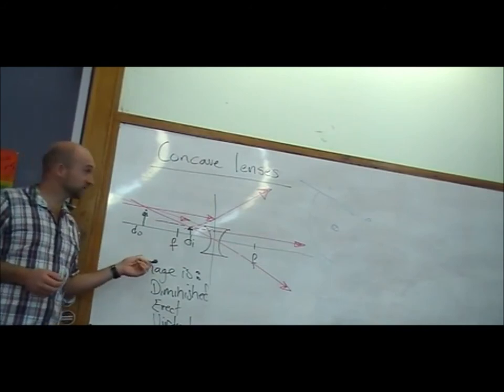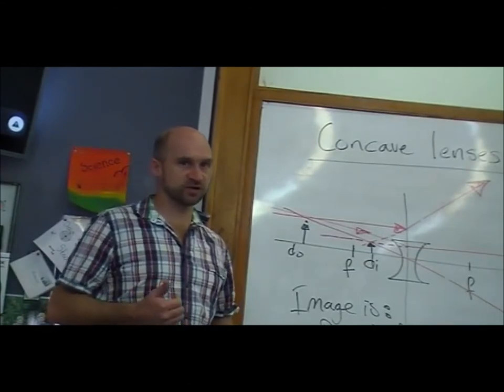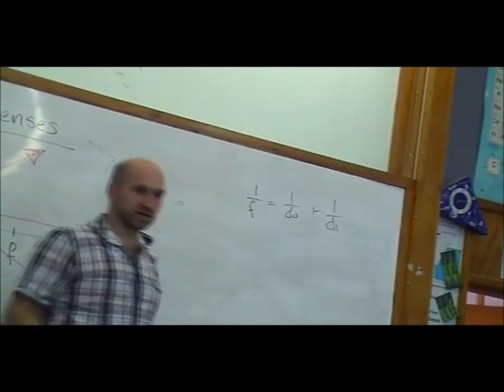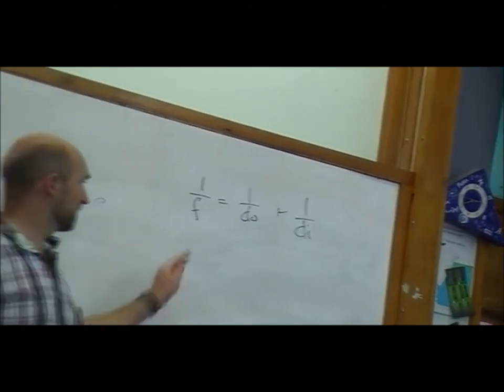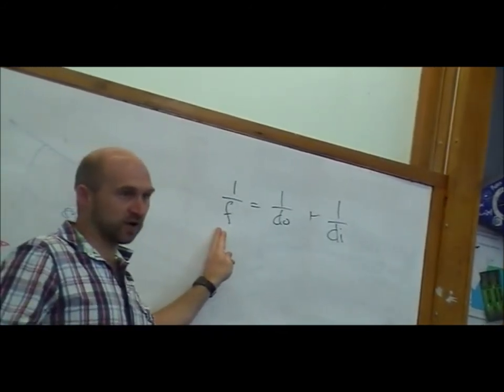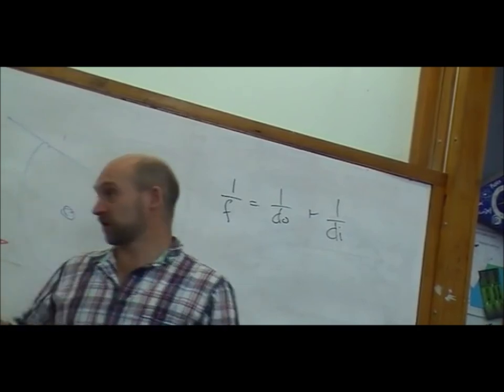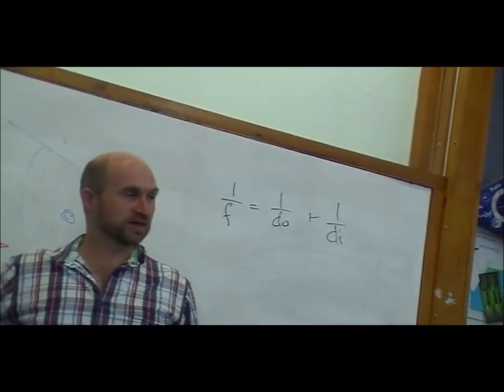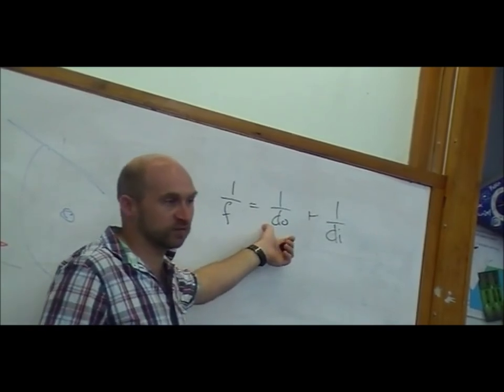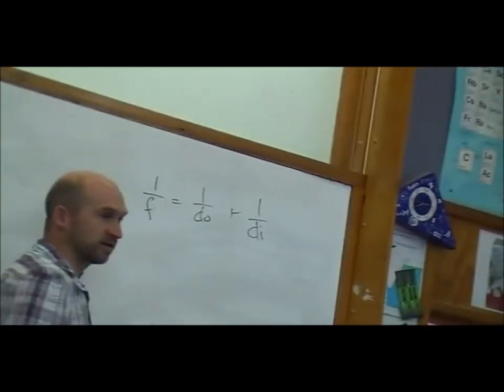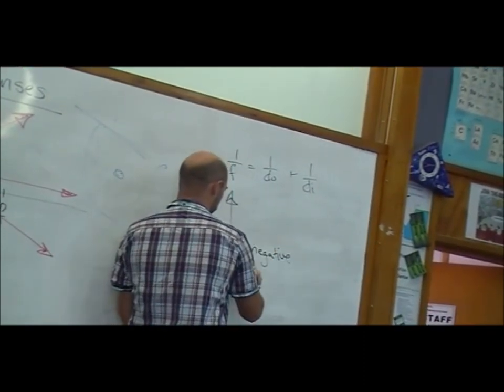When we're doing calculations for the concave lens, we're going to be able to use our same equation. Our 1 over F is 1 over DO plus 1 over DI. The thing we have to be aware of, and careful of, and the thing that will often trip us up when we're doing calculations, is that the focal length of a concave lens like this is always going to be negative. And, because the image we form is always going to be virtual, that DI is also always going to be negative. The DO has to be real, the object has to be a real object, so that's always going to be positive. But, for a concave lens, we're expecting that F is negative.